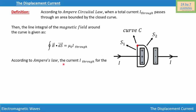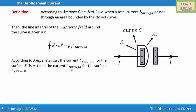According to Ampere's Circuit Law, the current I-through for surface S1 is I, because current I is passing through the circuit, charging one end of the capacitor positively and the other end negatively. When the current I enters here, it also leaves the circuit. So the current for surface S1 is I, and the current I-through for surface S2 is zero.